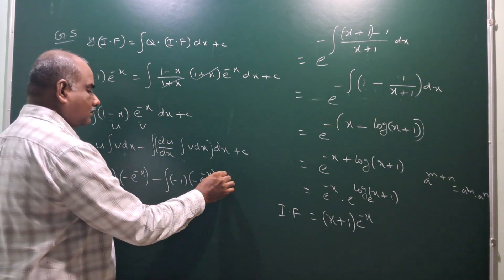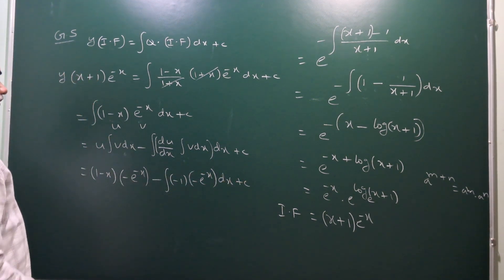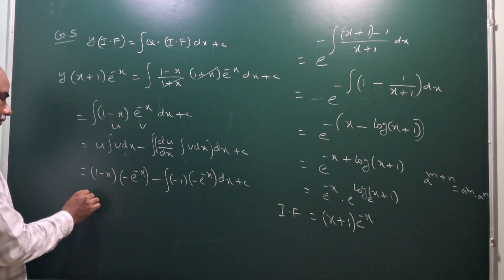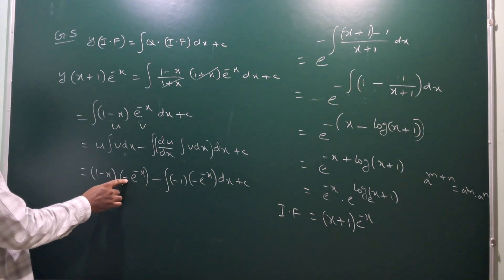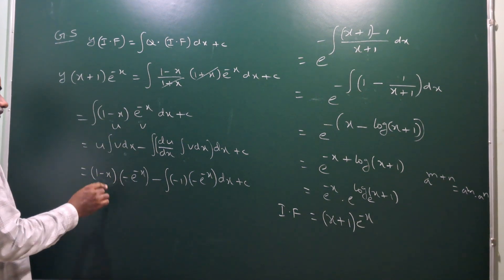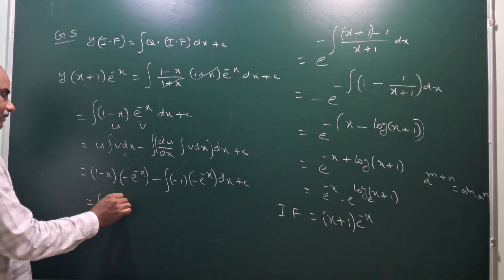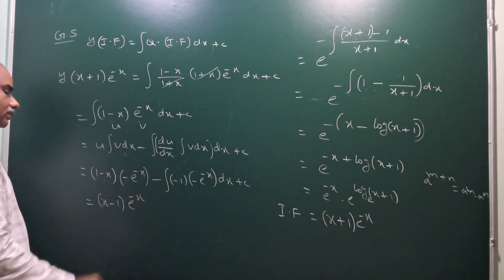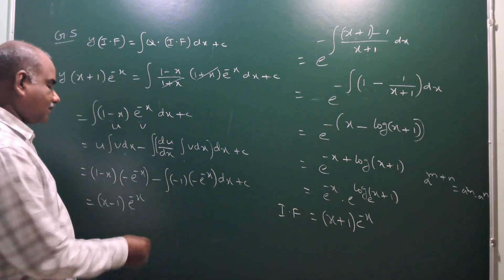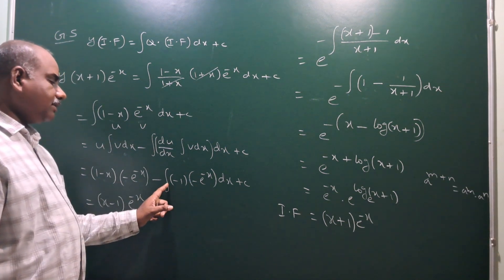The derivative of (1 minus x) is minus 1, so du by dx is minus 1. Applying the formula: (1 minus x) into (minus e to the power minus x) minus integral of (minus 1) into (minus e to the power minus x) dx. This gives minus (1 minus x) e to the power minus x, minus integral of e to the power minus x dx.